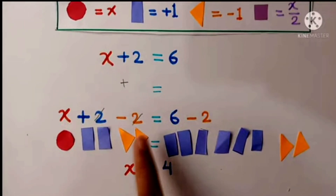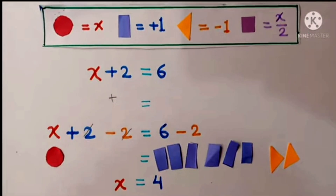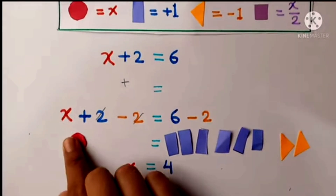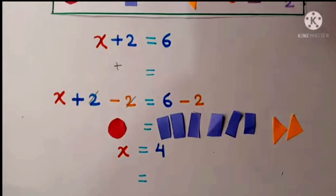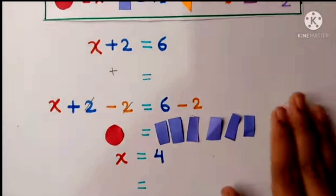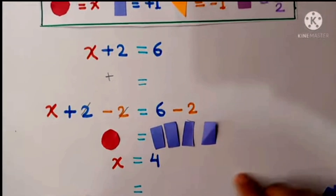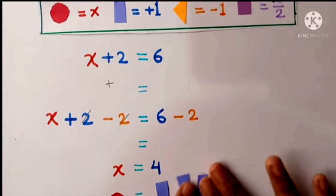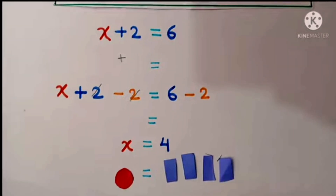Here plus 2 and minus 2 will be cut and become 0, so let's take it away — and here remains x. On the other side, 6 minus 2 is equal to 4, then all things will be removed and here will be 4. So x is equal to 4. Our first equation is solved.